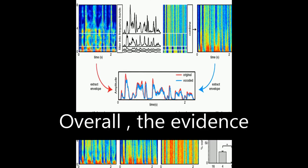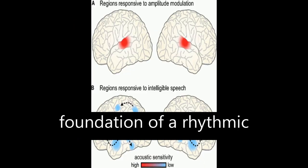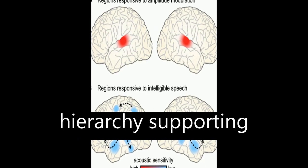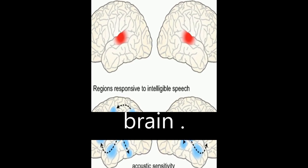Overall, the evidence suggests that low-frequency oscillations in the acoustic speech signal form the foundation of a rhythmic hierarchy supporting spoken language, mirrored by phase-locked oscillations in the human brain.